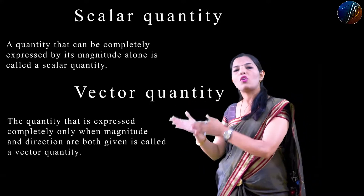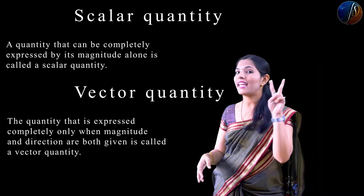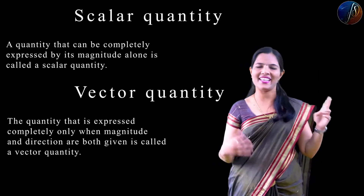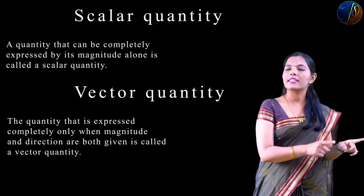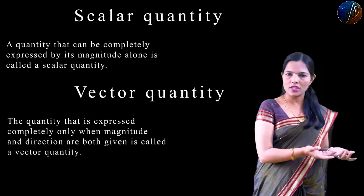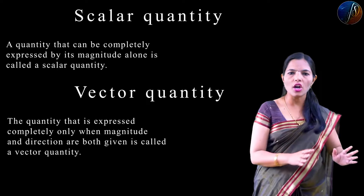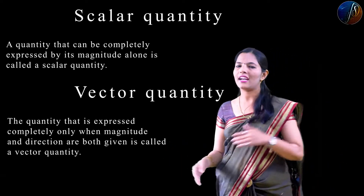The quantity which can be expressed both with the help of magnitude as well as direction is called the vector quantity. In scalar, direction is not important. But in vector, direction is important.